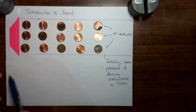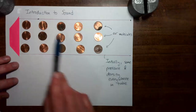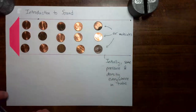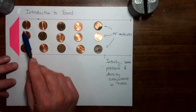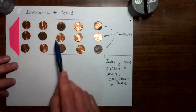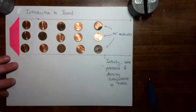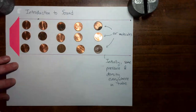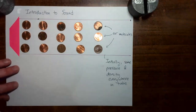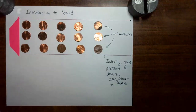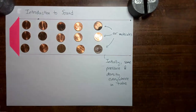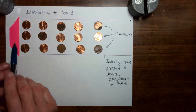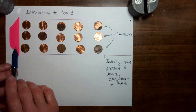To get started, what I have here is a tube which has some air in it, and you can see that the air molecules are distributed evenly throughout the tube. Because the air molecules are distributed evenly throughout the tube, we initially have the same pressure and the same density everywhere in the tube. Over at this end of the tube, I have a speaker.